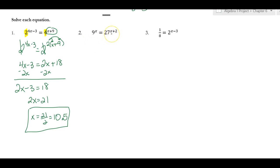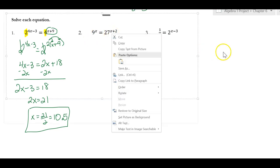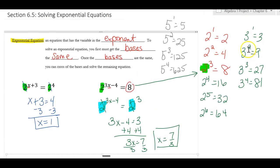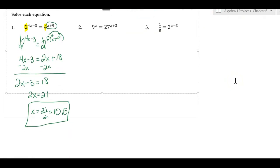When we look at number 2, 9 and 27, neither of them are prime, but if you look up at your list you should notice 9 is 3 squared and 27 is 3 to the third. So I'm going to rewrite 9 as 3 squared with the x there, and 27 is 3 to the third with x + 2 there. Now I have the same bases.